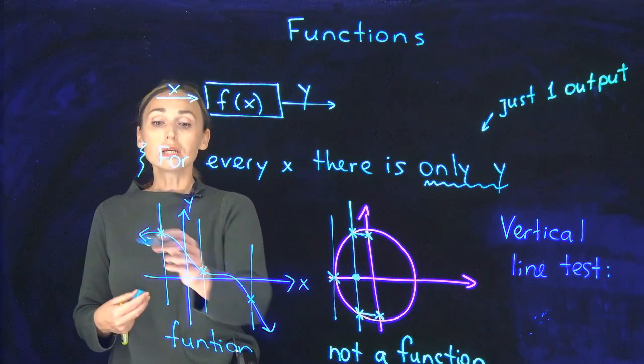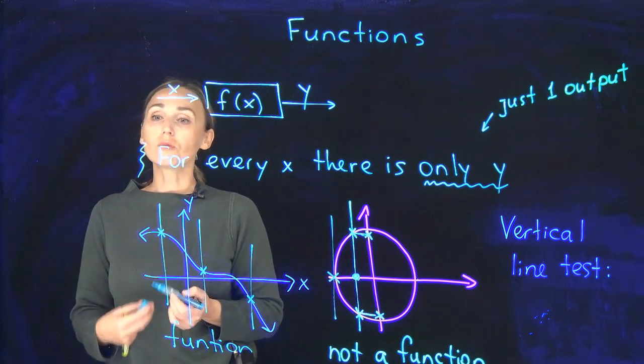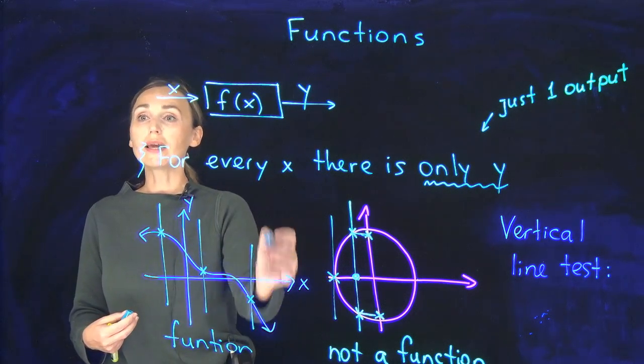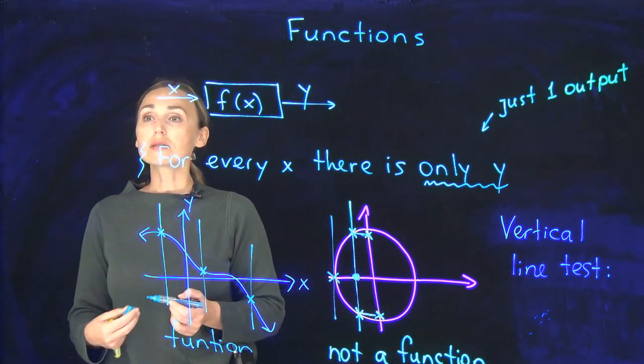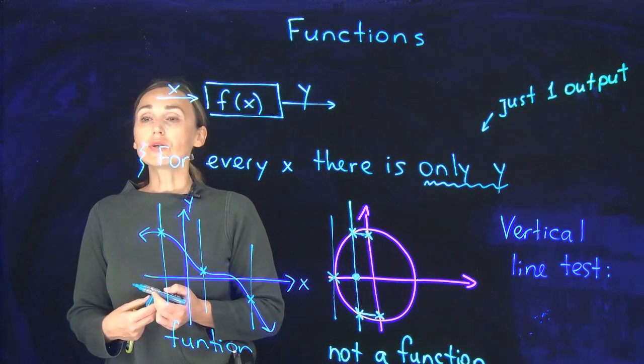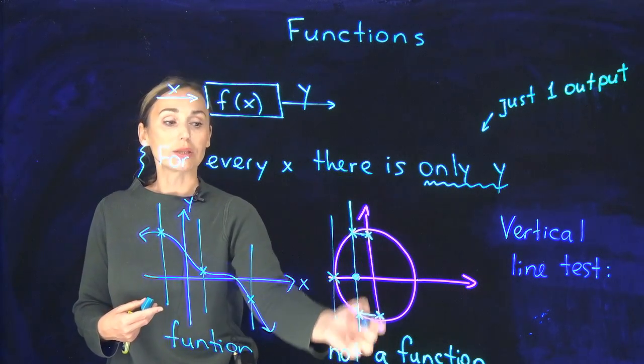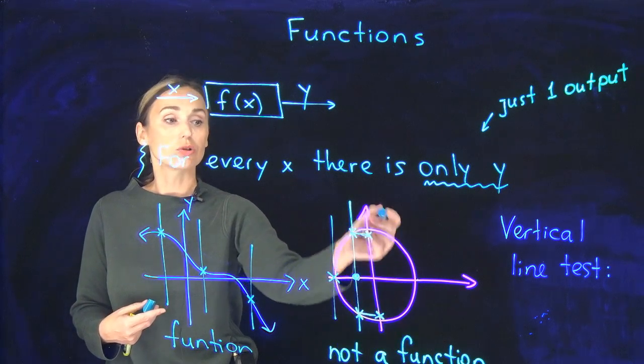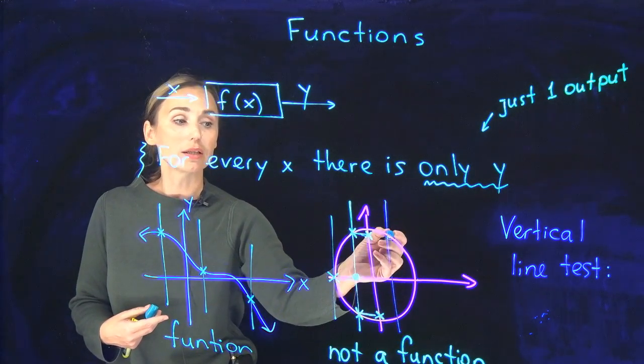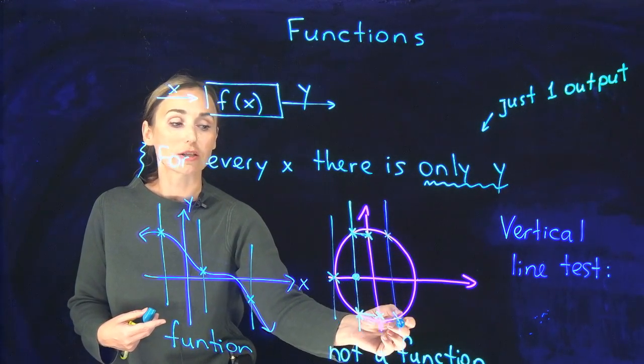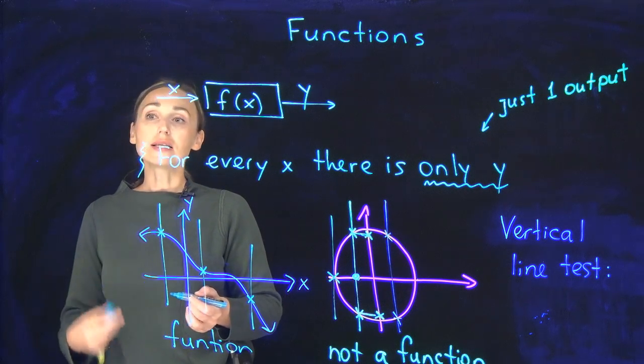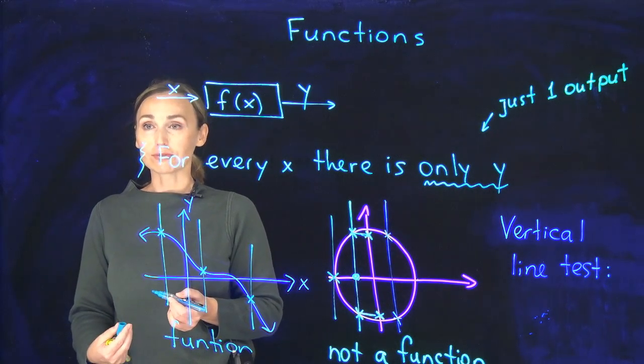So let me remind you how to formulate vertical line test. If a given curve has just one point of intersection with any vertical line, this is a function. If a given curve has more than one point of intersection with any vertical line that you draw, for example, I draw it here and again I have two points of intersection, more than one, so this curve does not represent a function.